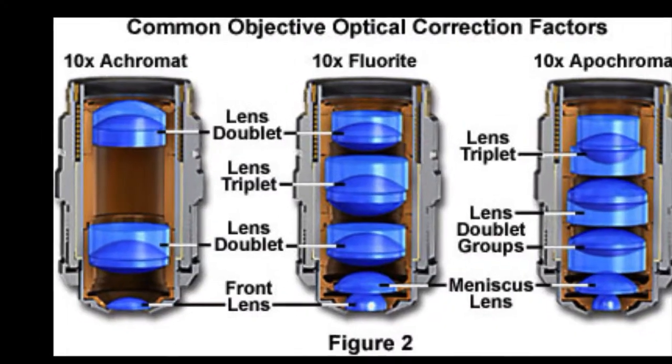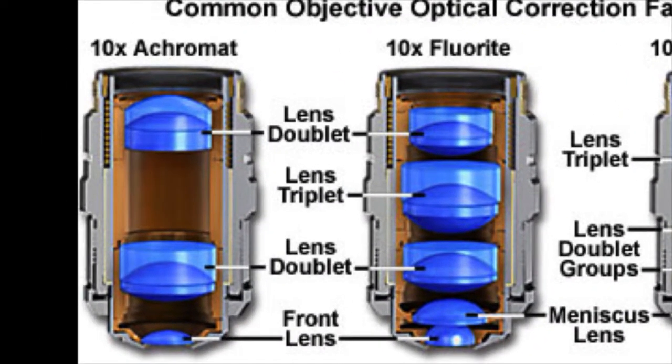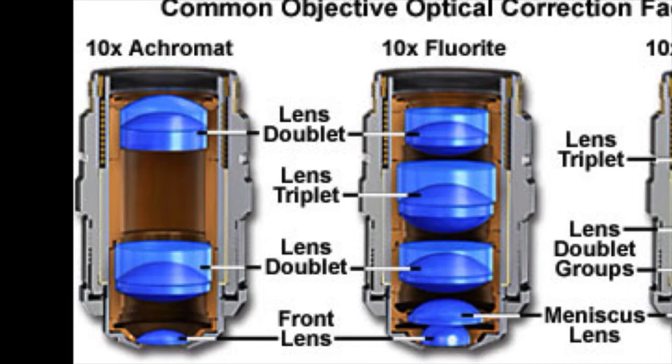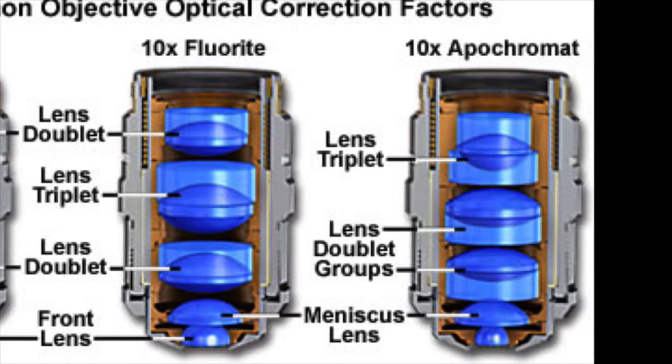Here on the screen, you see several different types of objectives. The first one is called an achromat. This is the least expensive objective manufactured. It does have several lenses in it, but not as many as the higher corrected lenses do. An achromat is a fairly low resolution objective that is not corrected for flatness of field.